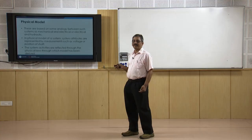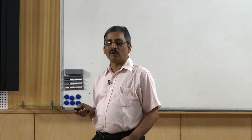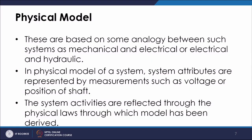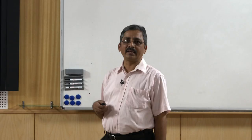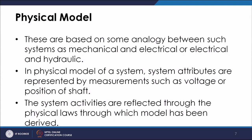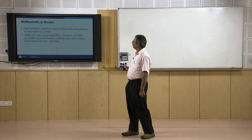Physical models, as the name indicates, have a real physics basis. These are based on some analogy between systems such as mechanical and electrical, or electrical and hydraulic. In a physical model of a system, system attributes are represented by measurements such as voltage or position of a shaft. The system activities are reflected through physical laws through which the model has been derived.